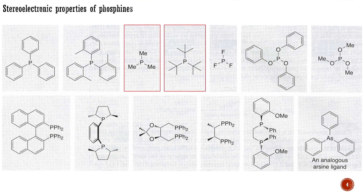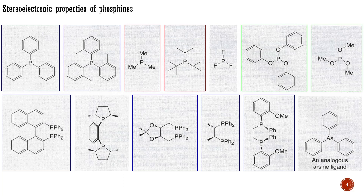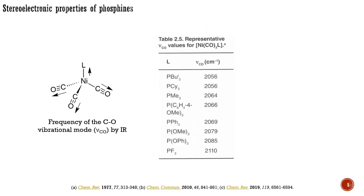In general, phosphines bearing three alkyl groups are the most electron-donating among the dative phosphorus ligands. Arylphosphines are less electron-donating, as the greater s-character of the sp2 hybridized orbital of the aryl group makes it a weaker electron donor than an alkyl group. Similarly, phosphites, which contain three alkoxy groups at phosphorus, are the least electron-donating ligands. There are several approaches available for quantifying the donor abilities of phosphines.